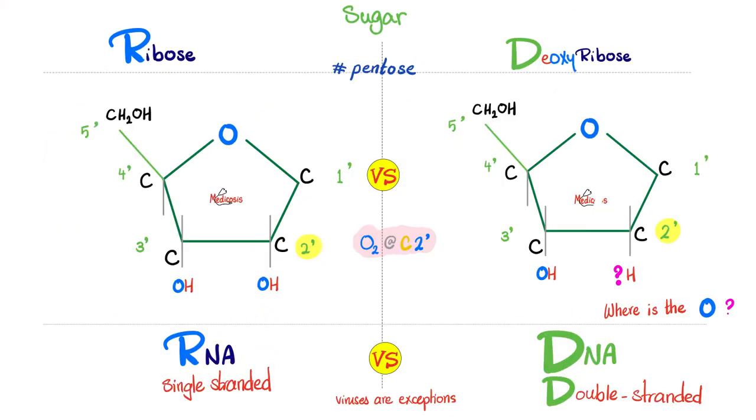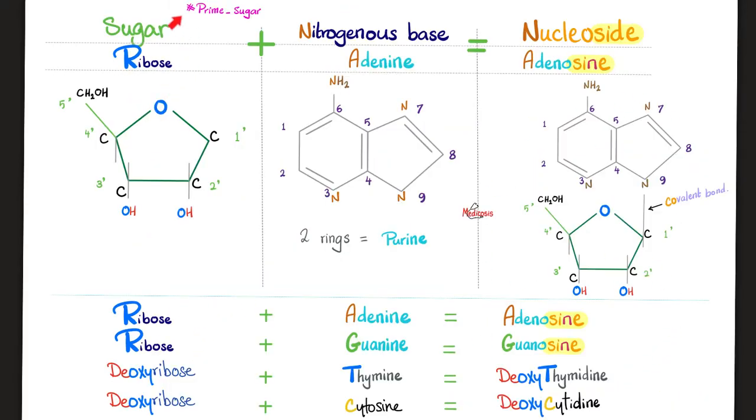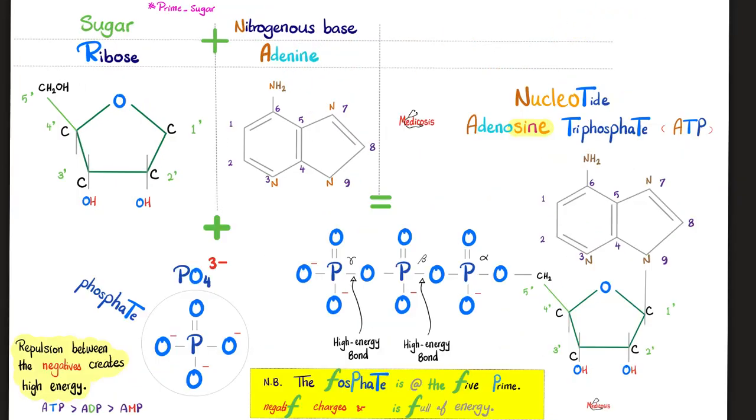DNA versus RNA. DNA has deoxyribose. RNA has ribose. DNA is double-stranded. RNA is single-stranded. Viruses are exception to this rule. Moreover, DNA has thymine, but RNA has uracil. DNA cannot leave the nucleus. RNA can leave the nucleus. Sugar plus base equals nucleoside. Example, ribose sugar plus adenine base equals adenosine, which is a nucleoside. Add a phosphate group to it, which is negatively charged. And before you know it, we have nucleotide, such as adenosine triphosphate. Never ever forget that the phosphate is at the five prime, always the five prime carbon. Phosphate has a negative charge, and phosphate is full of energy.